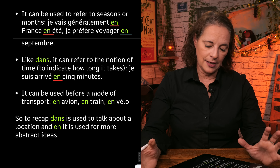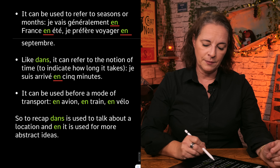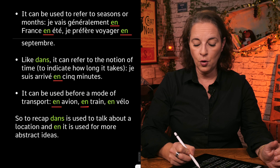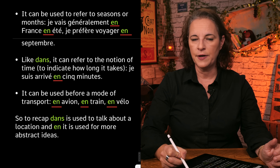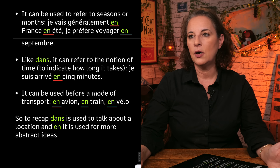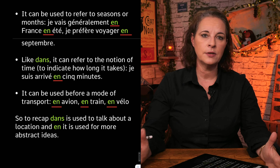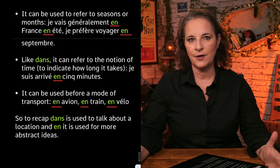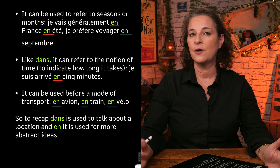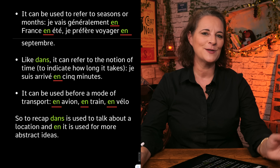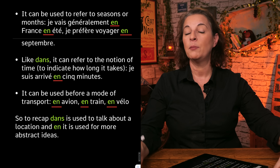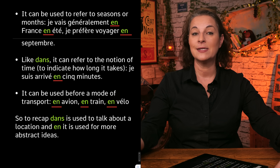En can also be used before a mode of transport: en avion — by plane, en train — by train, en vélo, etc. Je vais à Londres en train — I'm going to London by train. Je vais en France en train — I'm going to France by train. I said à Londres because to refer to a town you don't say en; but to refer to a feminine country, you say en.